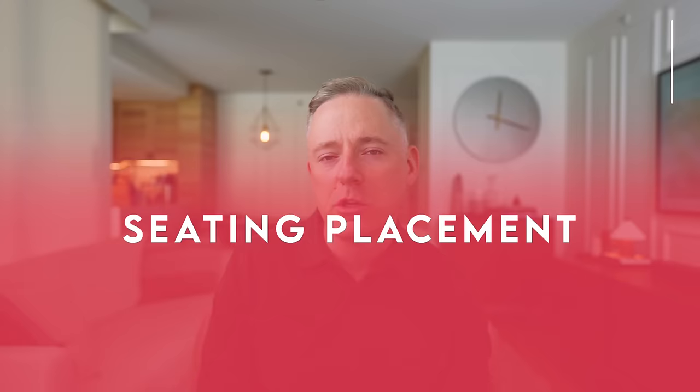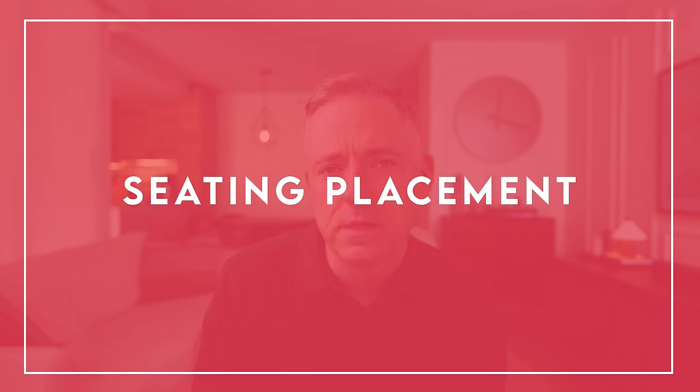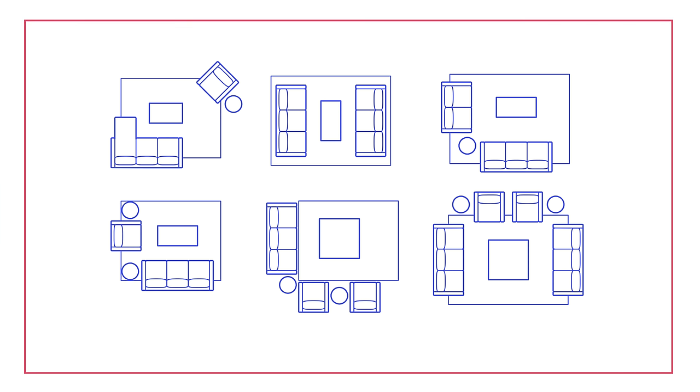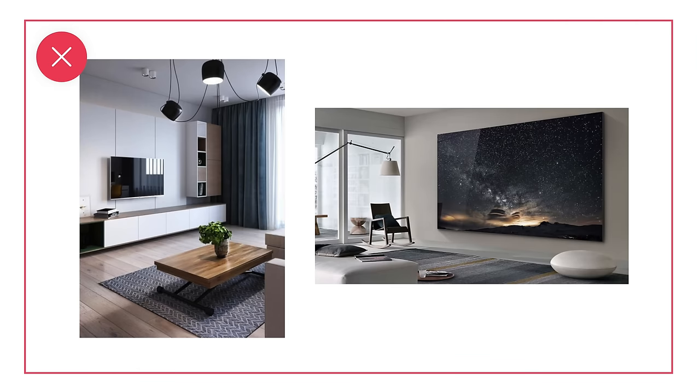So let's get going. The first mistake that I see is going to be incorrect seating placement. There are a few different ways in which you can create a seating placement for your living room — your side chairs, your love seat, your sectional, your sofa, whatever you've got. There are a few different options: some are symmetrical, some are asymmetrical, but you've got lots of options there.